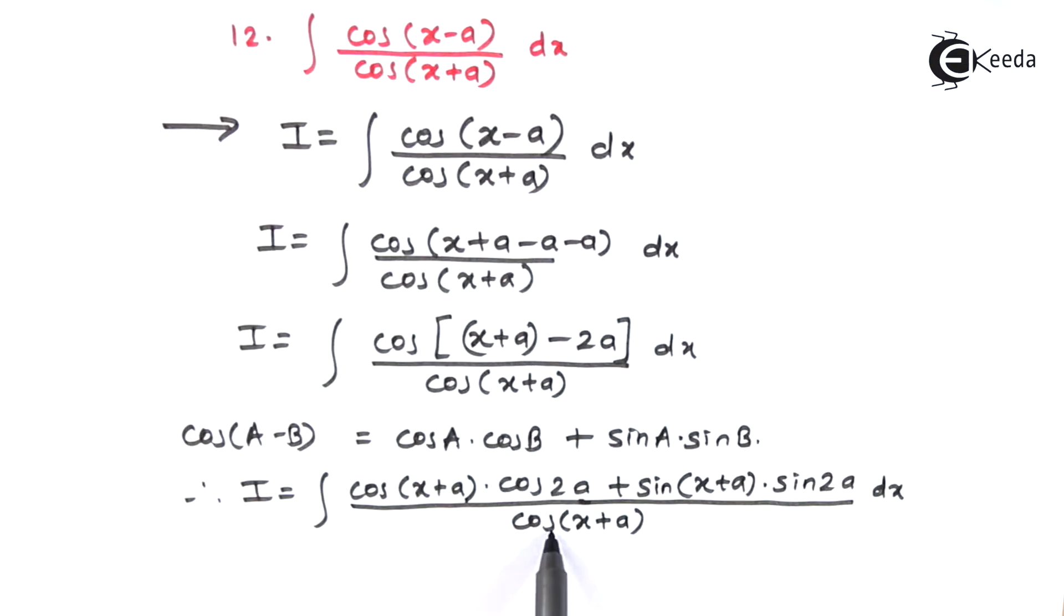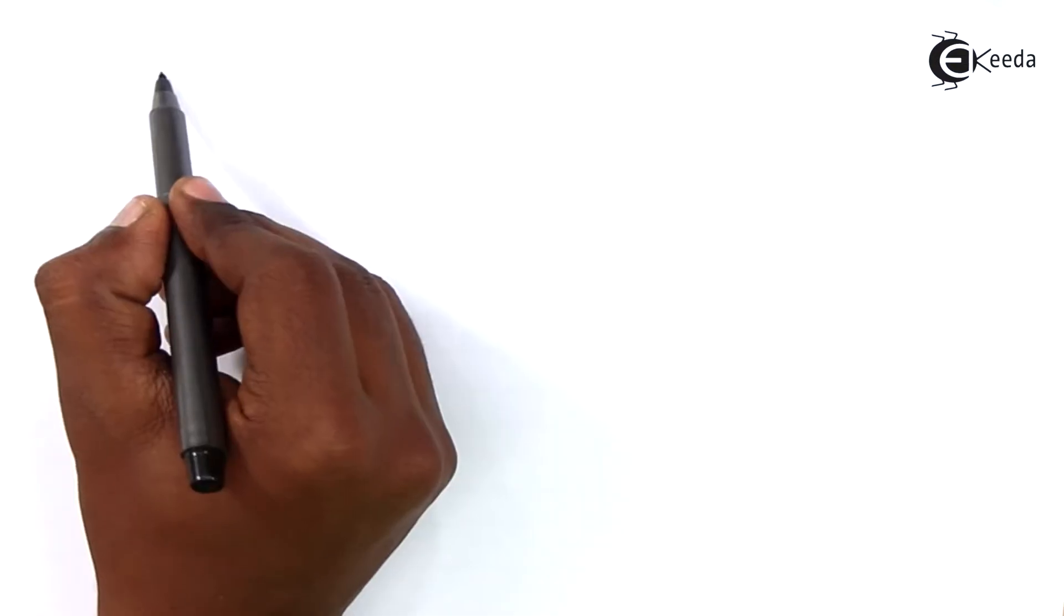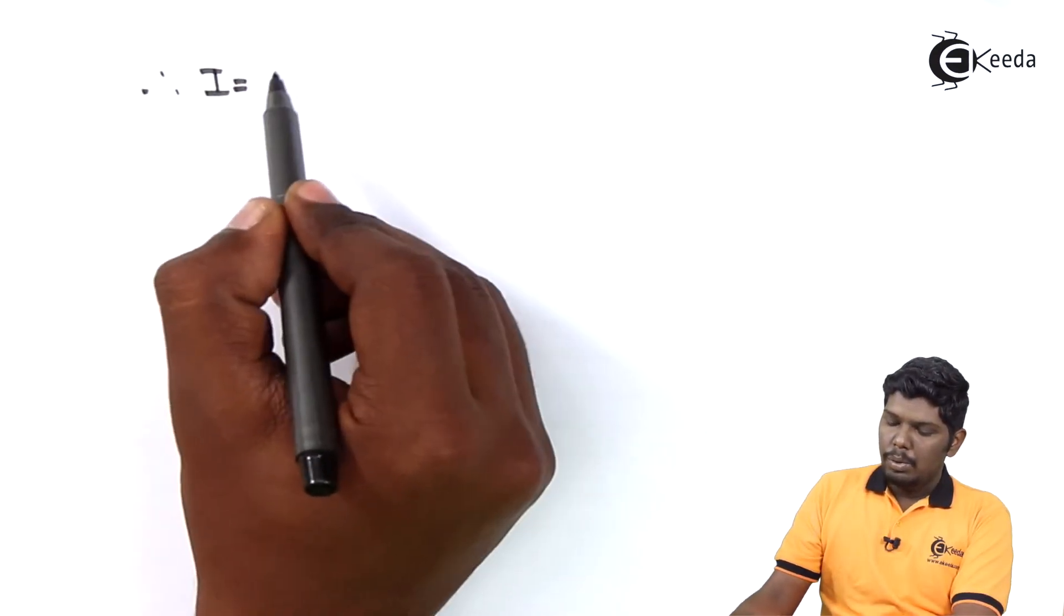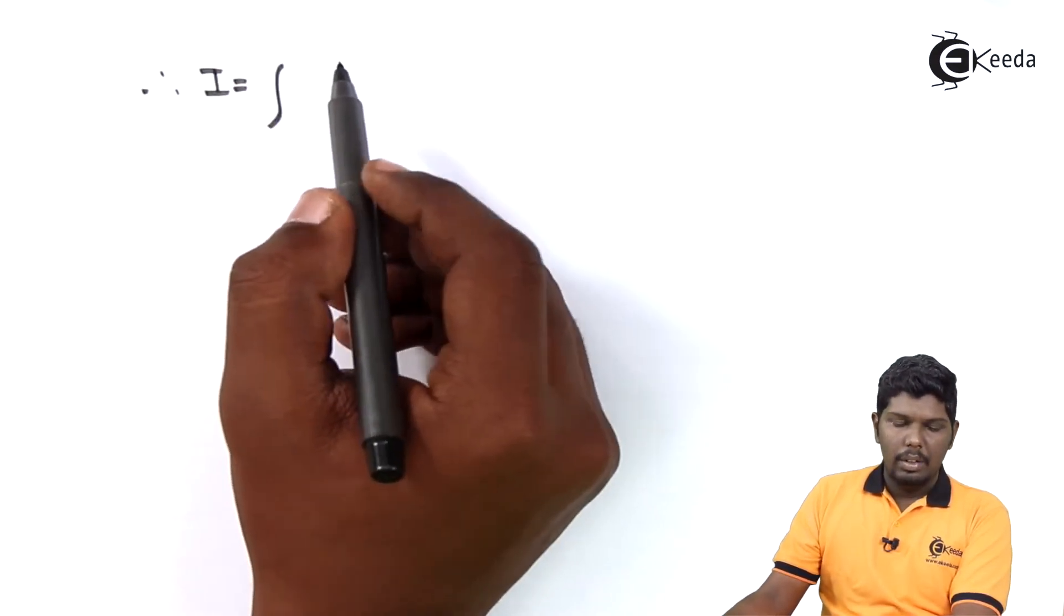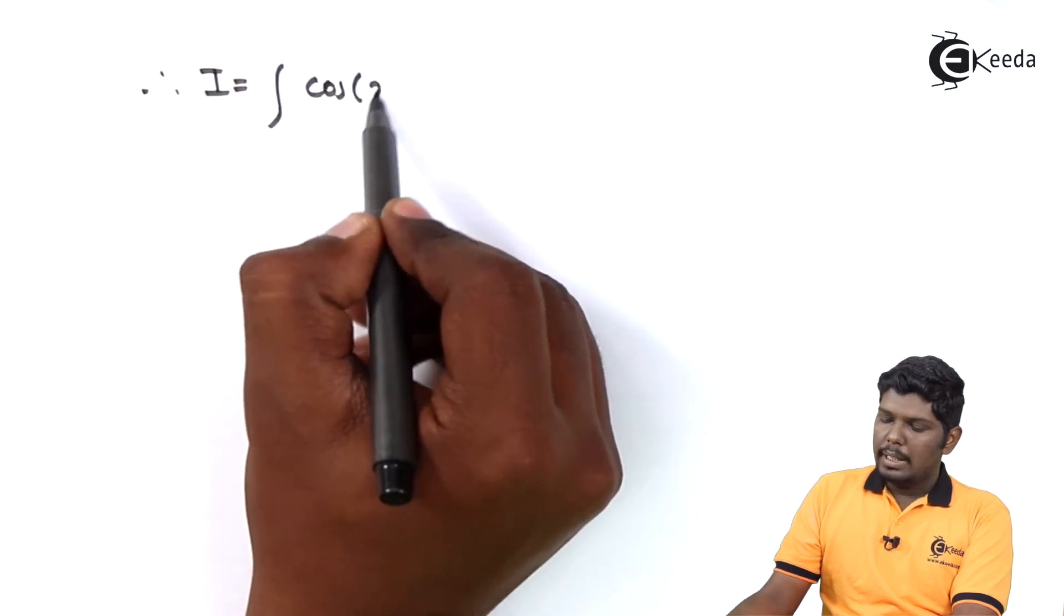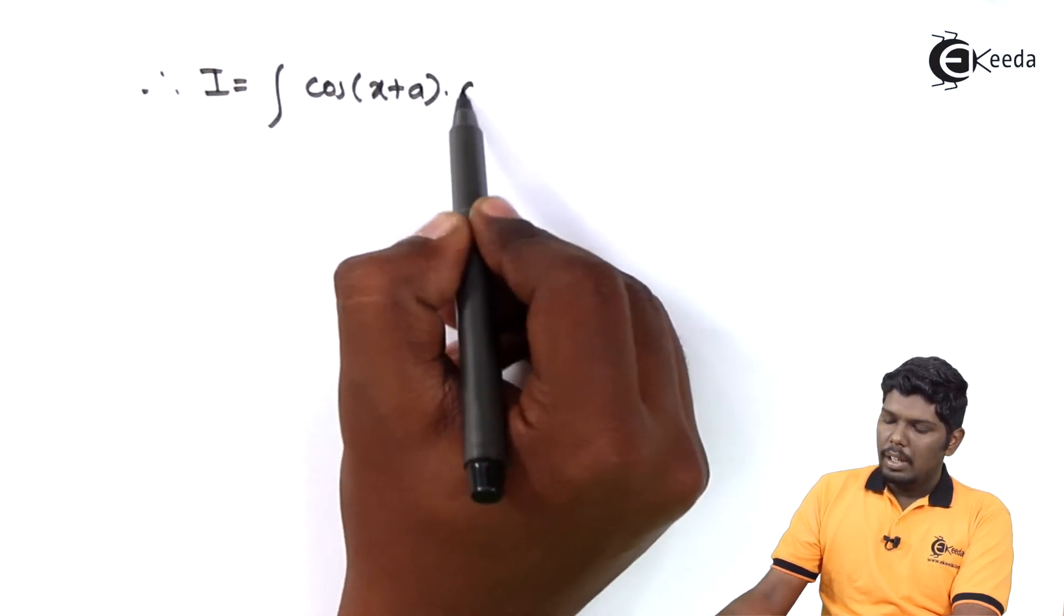Further, we can separate cos(x+a) to both the terms present in the numerator. Therefore, I is equal to integral cos(x+a) into cos 2a upon cos(x+a)